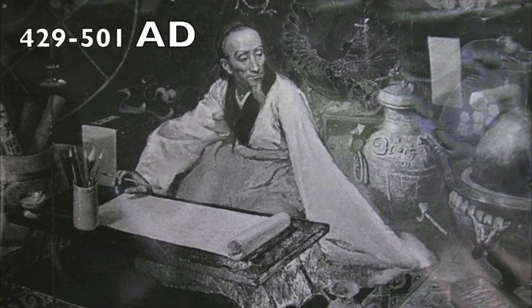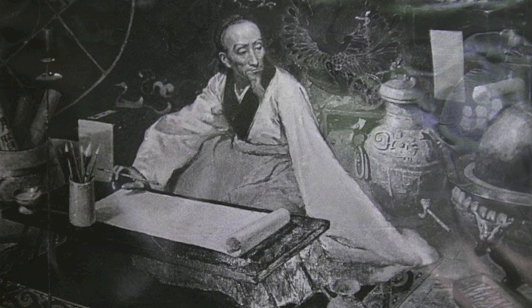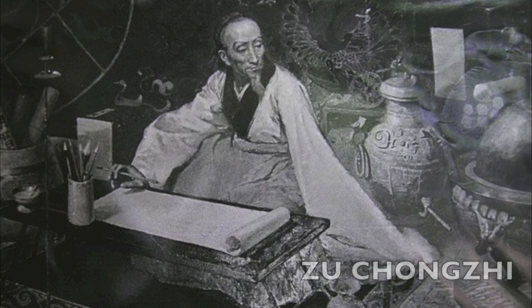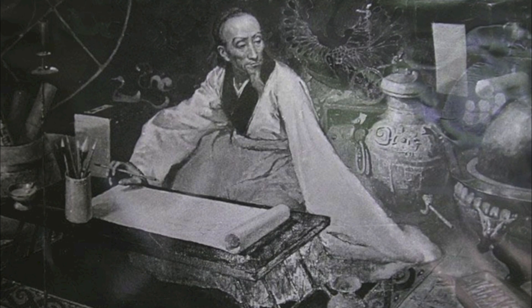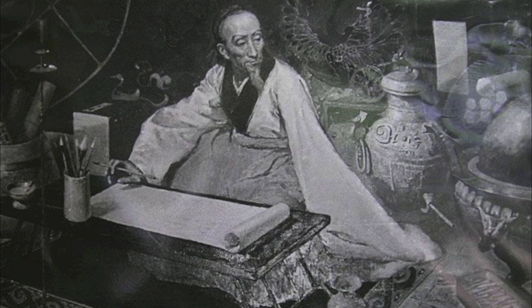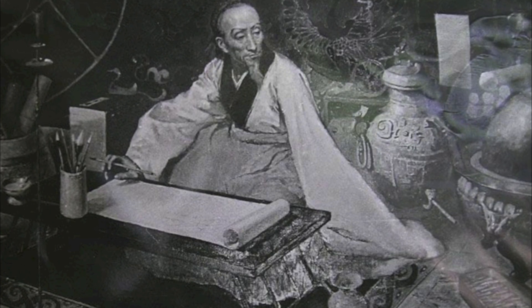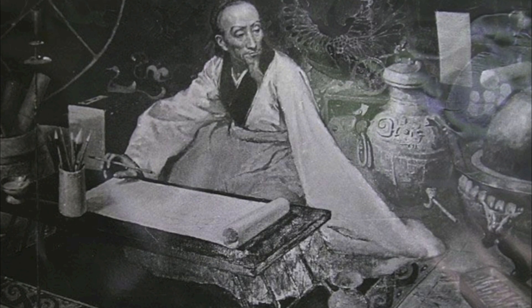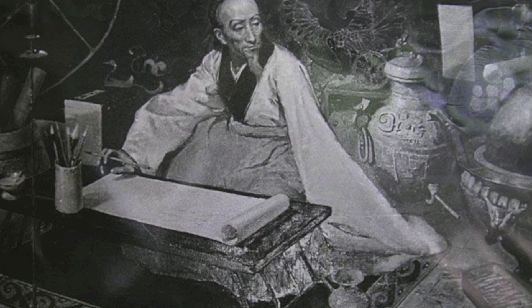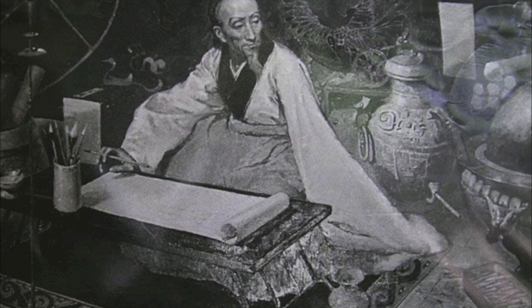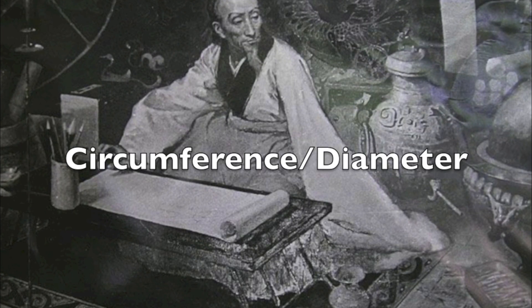In 429 to 501 AD, Chinese mathematician and astronomer Zhu Chongzhai used a similar method that Archimedes utilized; however, it was found that he would not have been aware of Archimedes' work at the time. His work showed that Pi was equal to the ratio of the circumference of a circle to its diameter.